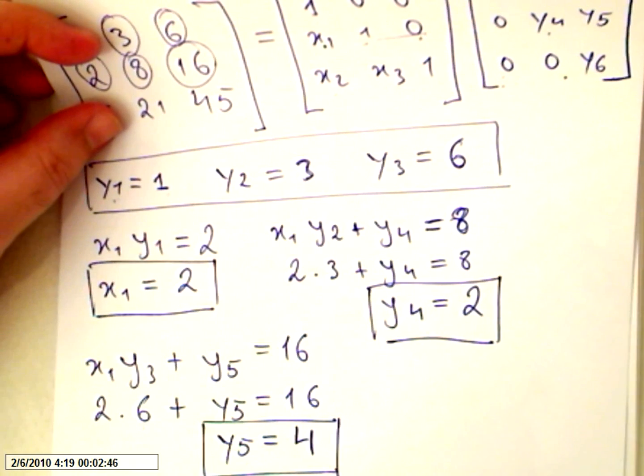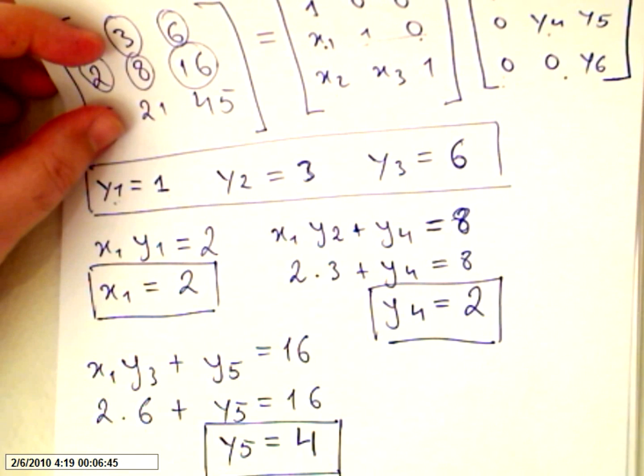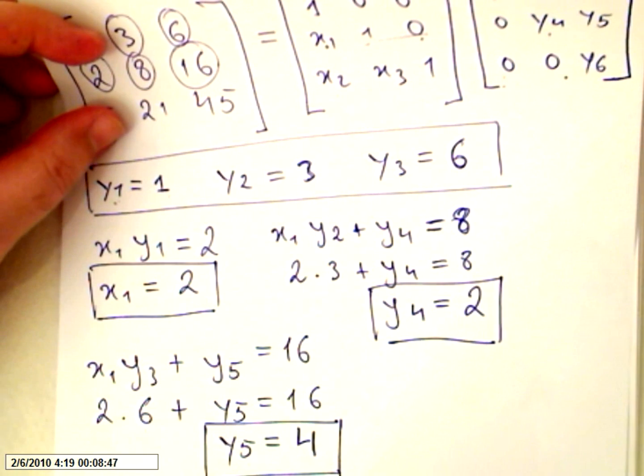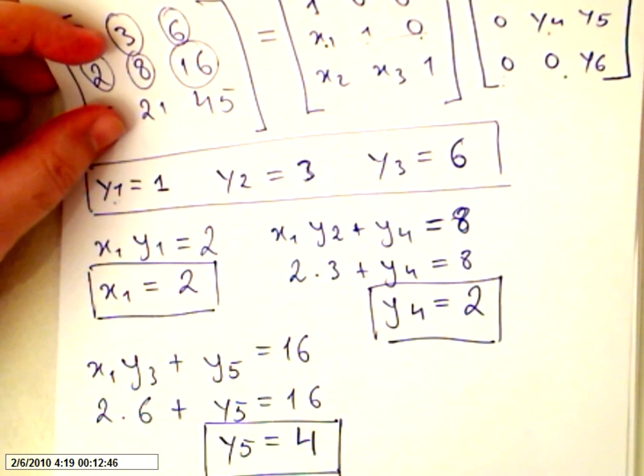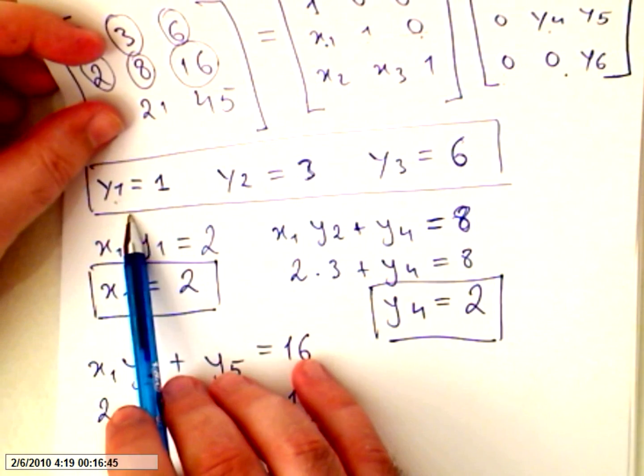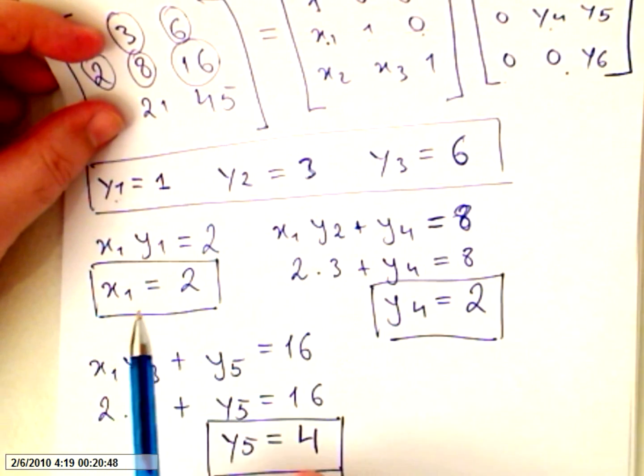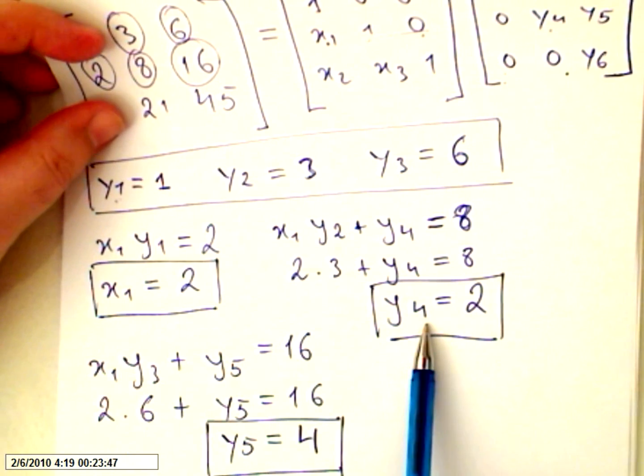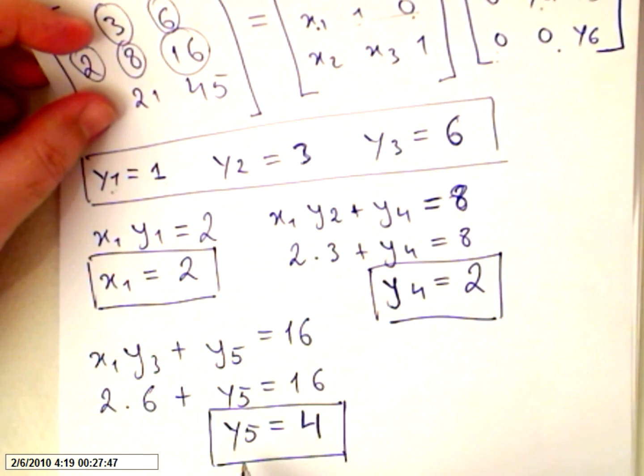This is the third video about solving a system of equations through LU decomposition. So far we've already found values for y1, y2, y3, x1, y4, and y5.